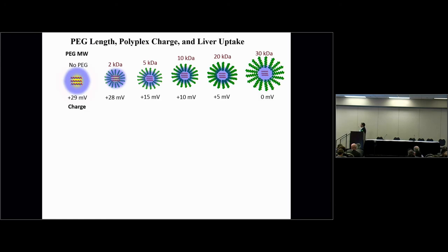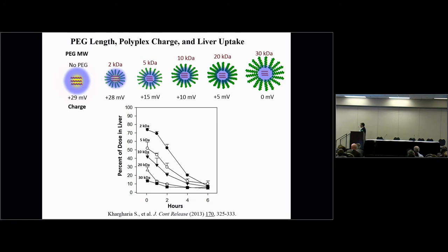One thing you can do is hide the charge by growing the PEG length up to 30 kDa. You can see that when you reach zero millivolts of charge, you get very low or no uptake in the liver relative to particles with higher charge. But it's not practical to use 30 kDa PEGs because bioconjugate chemistry on these becomes nearly impossible.